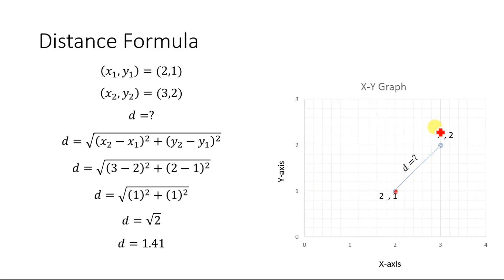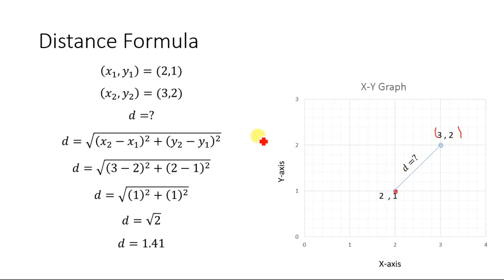The second point is represented by (3, 2), where 3 represents x2 and 2 represents y2. Using the distance formula, we can easily find the distance between these two points, and that distance is represented by d.